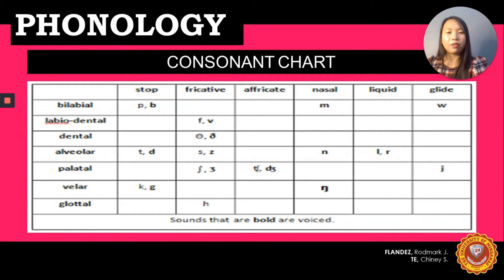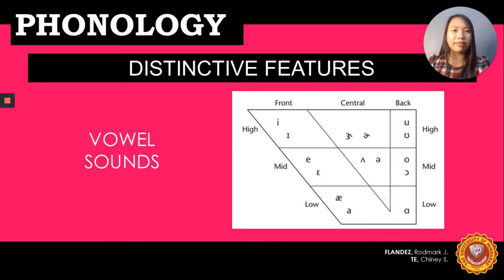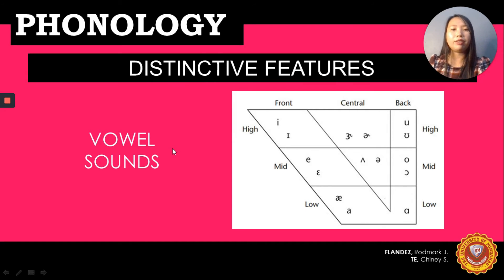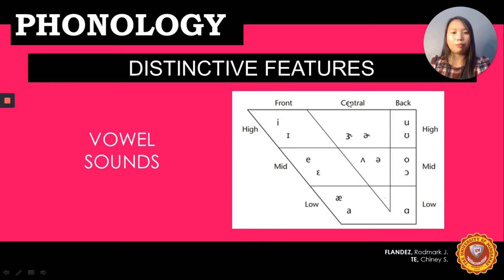I have here the consonant chart — sounds that are bold are voiced. Let's proceed to the vowel sounds. I have here the vowel triangle, which helps us describe how we use the mouth to pronounce vowels. One of the most important parts is vowel height: high, mid, and low. Next is vowel backness: front, central, and back. Lip rounding: some vowels are pronounced with rounded lips and some with flat lips. Finally, vowel duration — some vowels are longer than others.